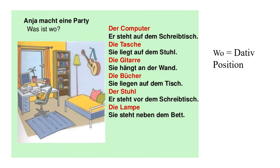Jetzt sehen wir, wie man wo mit Dativ benutzt. So hier seht ihr ein Bild — Anja macht eine Party. Was ist wo? If you see this picture, the things are kept in a proper order. Der Computer — where is the computer? Er steht auf dem Schreibtisch. The position of the computer is on the writing table. Wo steht der Computer? The question word 'wo' shows you Dativ case. Er steht auf dem Schreibtisch — der Tisch changes to dem Tisch in Dativ.